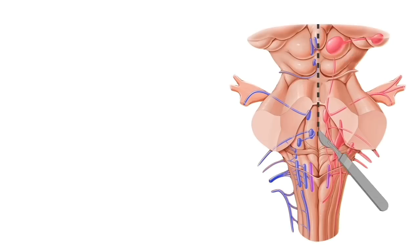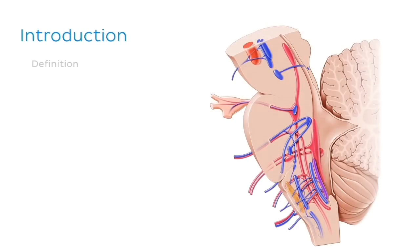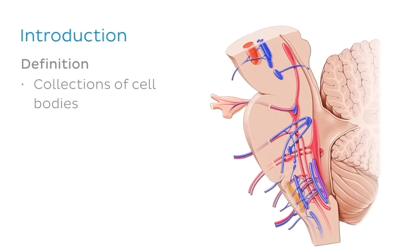We're currently looking at a sagittal section of the midbrain where we can see cranial nerve nuclei highlighted in various colours. The cranial nerve nuclei are collections of cell bodies, which can be distinguished to have either a motor or sensory function based on whether they project their axons to the periphery or back to the nervous system. The nuclei are collections of cell bodies in close proximity to one another, which allow signals to be relayed between distant locations.